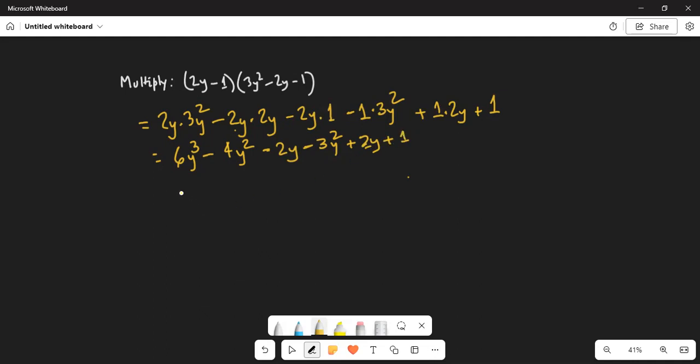So let's take the exponents of y. The first highest exponent is 3. Then there's minus 4y squared combined with minus 3y squared. And I have minus 2y and plus 2y, and plus 1.